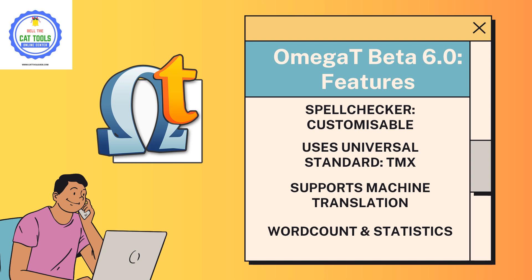OmegaT also supports machine translation. Please note that it doesn't do machine translation itself, but it supports machine translation services like Google Translate, Microsoft Translate, and many other providers — both free and paid machine translation functionality can be used within OmegaT.